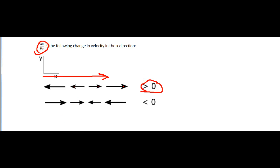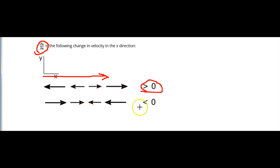Now look at the case where the partial derivative is less than zero, or negative. As x increases, u becomes less positive — a negative change — then becomes negative, and then becomes more negative. Since the change in u is always negative with a positive change in x, the partial derivative is always negative.